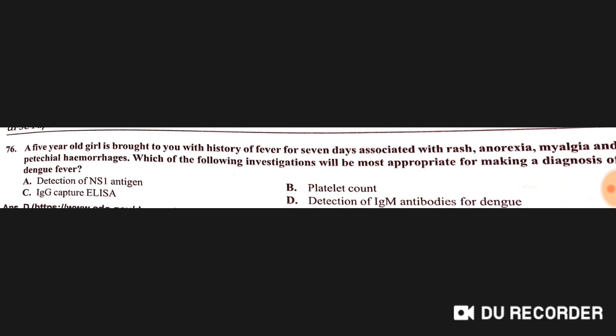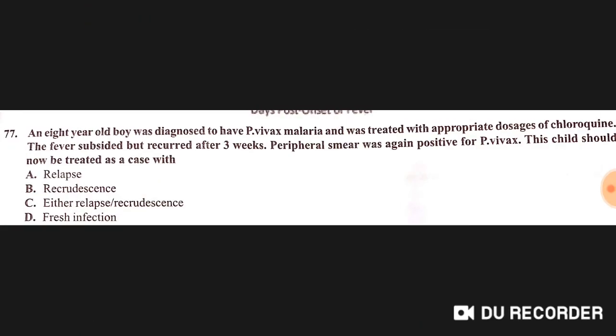A five-year-old girl is brought with history of fever for seven days, associated with rash, anorexia, myalgia, and petechial hemorrhage. The most appropriate investigation for diagnosis of dengue fever is detection of IgM antibodies for dengue in acute infection — option D is correct.